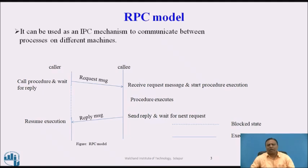A request message can be sent from caller to callee. After receiving the request, the callee starts procedure execution. The callee executes the corresponding procedure and the result is sent to the caller in the form of a reply. The callee sends the reply and waits for the next request. After getting the result, the caller resumes its next execution.